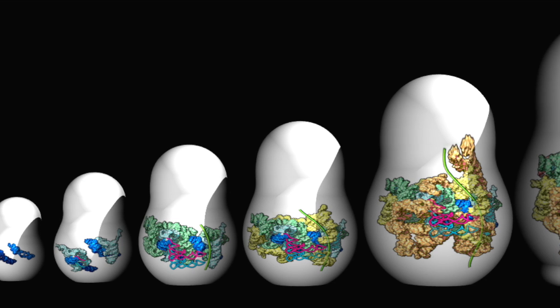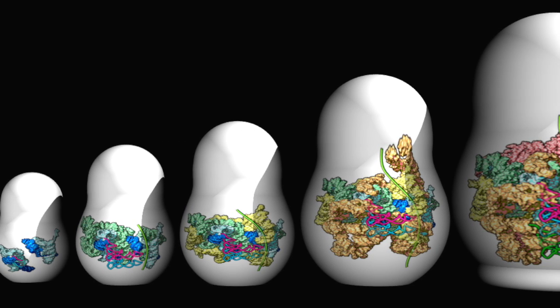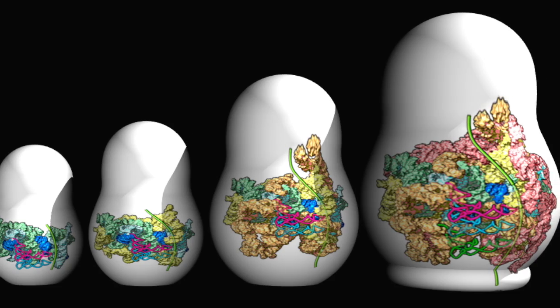The ribosome grew by accretion of new RNA on old RNA, like nested Russian dolls.